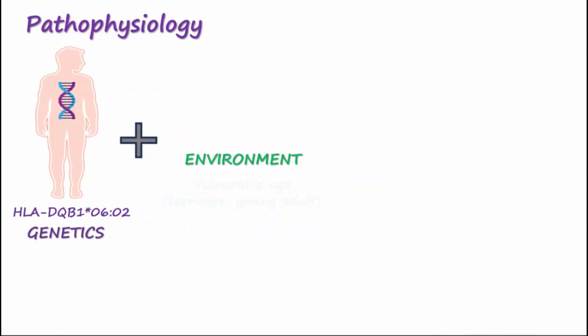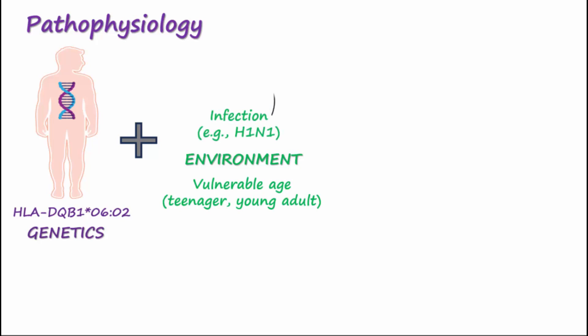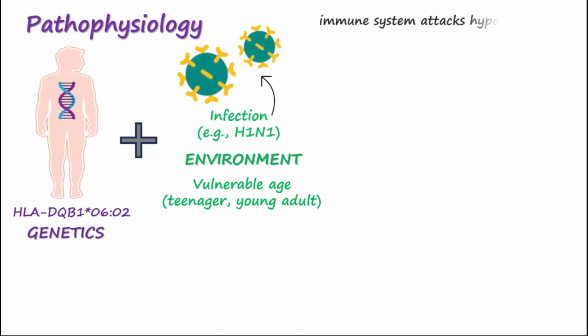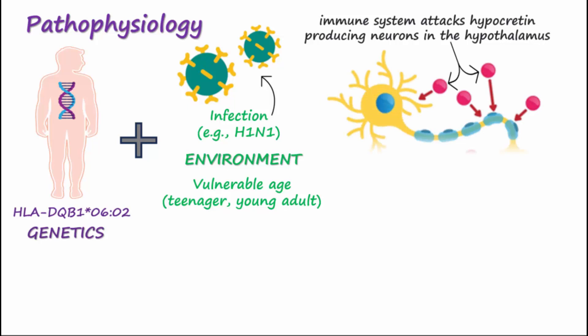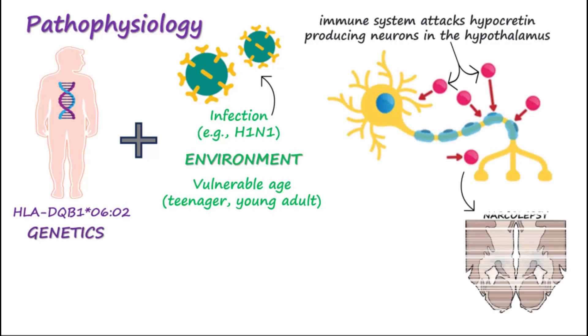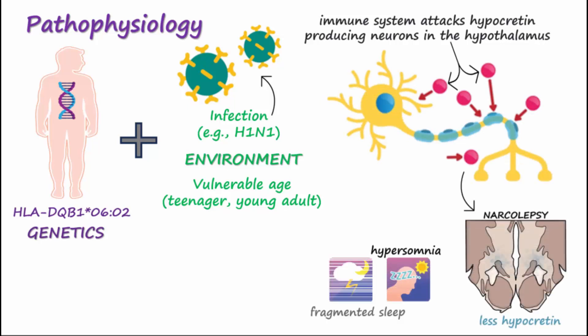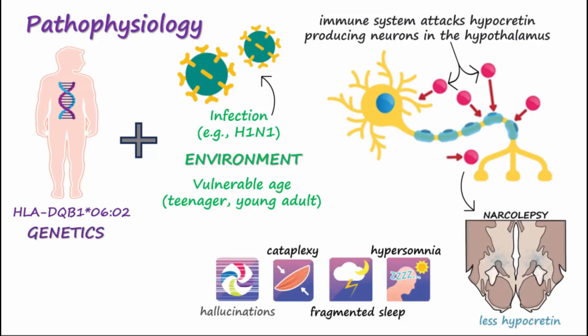Many cases are autoimmune. Genetics and the environment trigger the immune system to begin attacking hypocretin-producing neurons in the lateral hypothalamus, resulting in less hypocretin and symptoms.